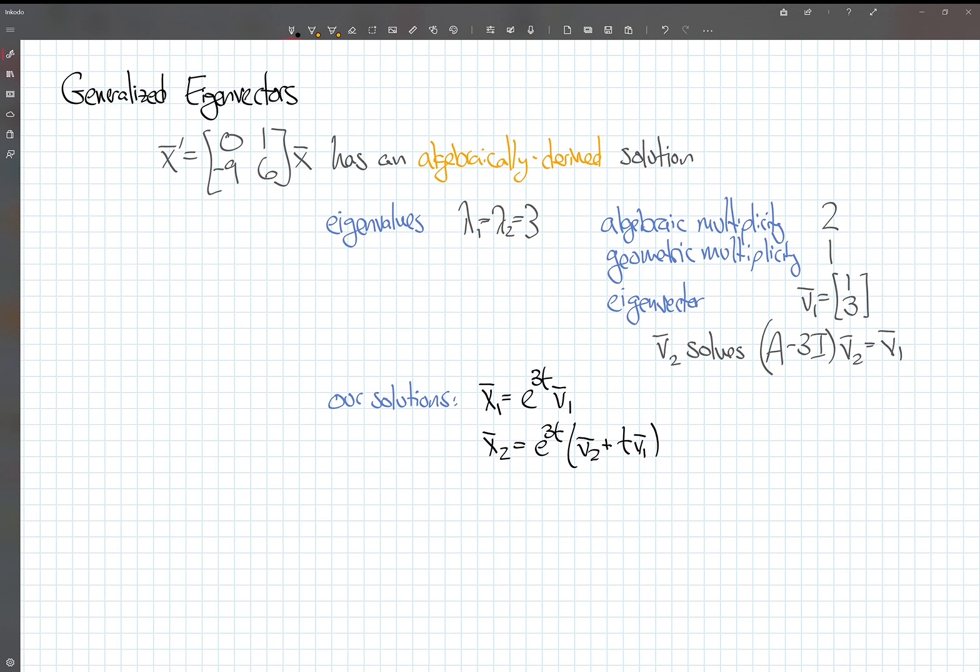In the last video, we saw that this equation has a really nice algebraically derived solution. I just want to remind us of how that whole thing worked. The first thing we did was compute the eigenvalues. In this case, there was only one eigenvalue.